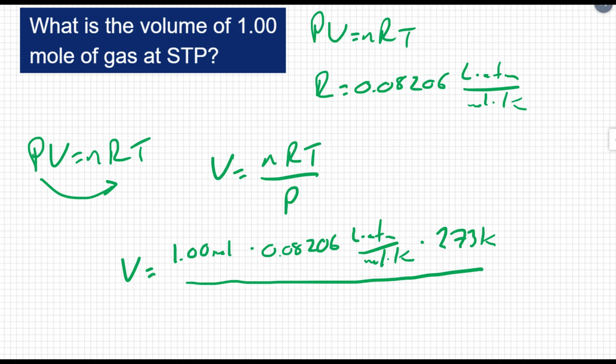My pressure at STP is just one atmosphere. Checking my units, moles cancel out, atmospheres cancel out, Kelvin cancel out. And I'm left with liters, which is what I should get for volume. When I do the math, I get a volume of 22.4 liters.